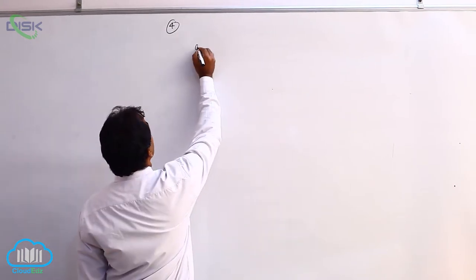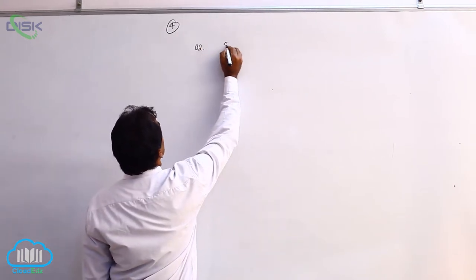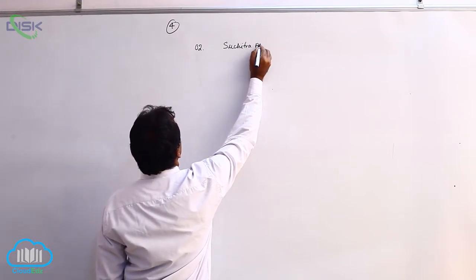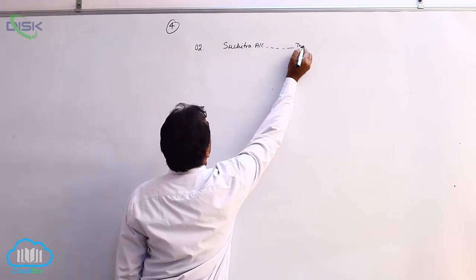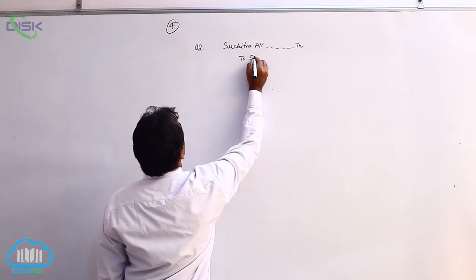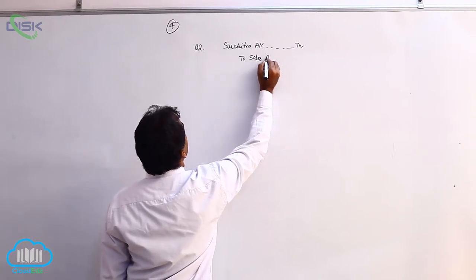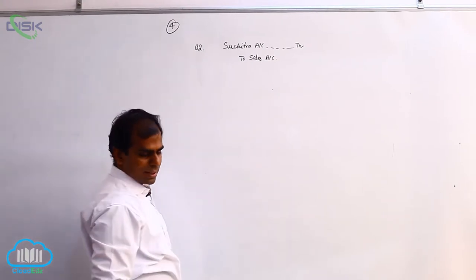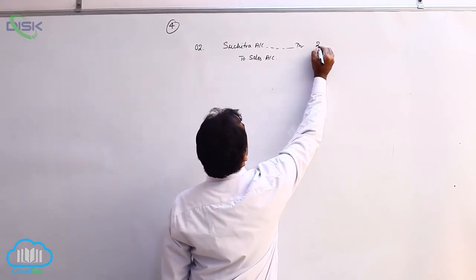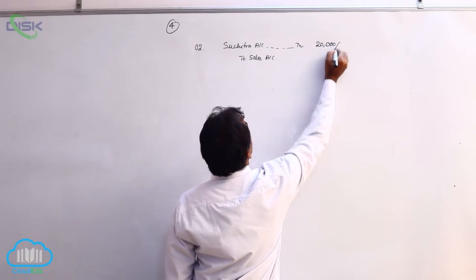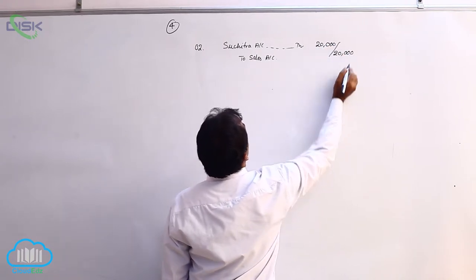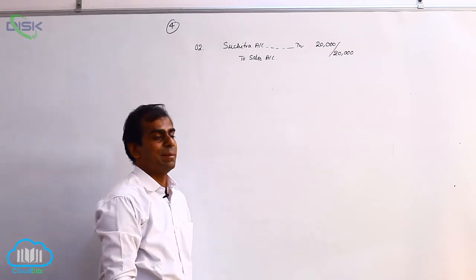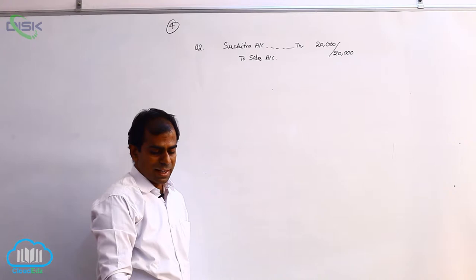So, the transaction on second, we can journalize as Suchitra account debit to sales. I am avoiding the usage of the word goods from now on. So, it is 20,000. Being goods sold to Suchitra on credit, or you can say simply being credit sales made.